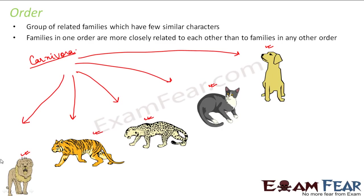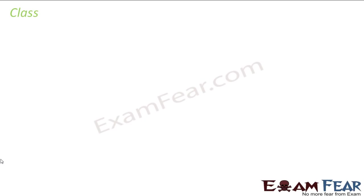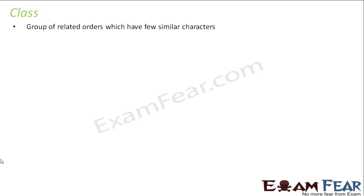You can see that gradually all these animals share somewhat similar characteristics, but as you keep grouping them and move up in the taxonomical hierarchy, their similarities will keep on decreasing. In a similar fashion, let us look at the other categories as well — let us look at class.